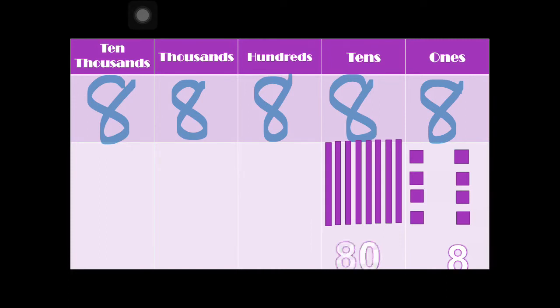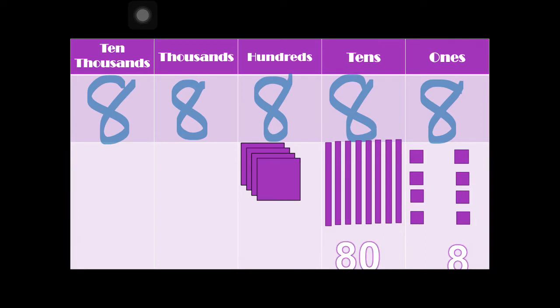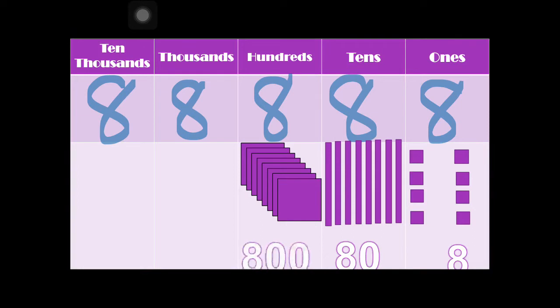How about at the hundreds place? Counting: 100, 200, 300, 400, 500, 600, 700, 800. So the value of digit 8 at the hundreds place is 800.